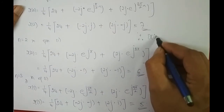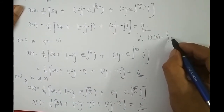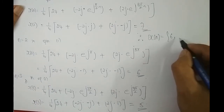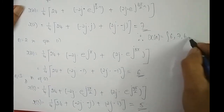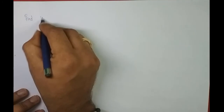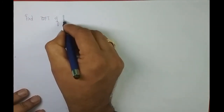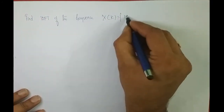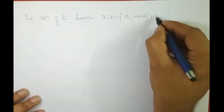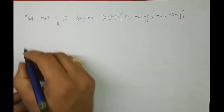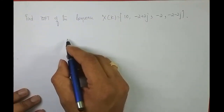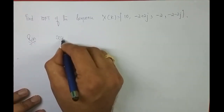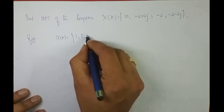Therefore the IDFT of the sequence is x of n = {6, 7, 6, 5}. Now take up one more problem to find 4-point IDFT. Find the IDFT of sequence X of k = {10, −2+2j, −2, −2−2j}. You try to solve this; the time domain sequence x of n that you should get is {1, 2, 3, 4}.